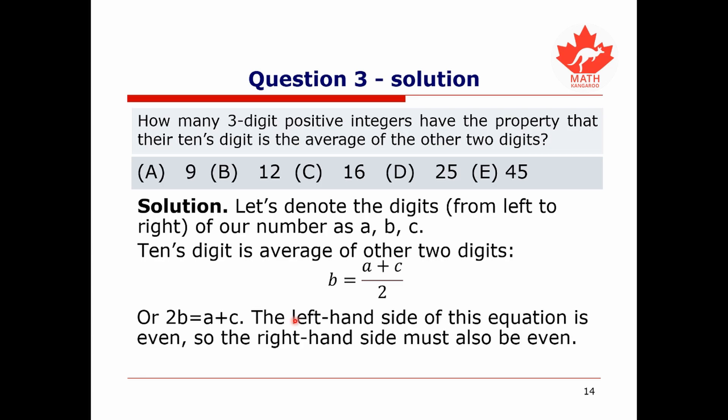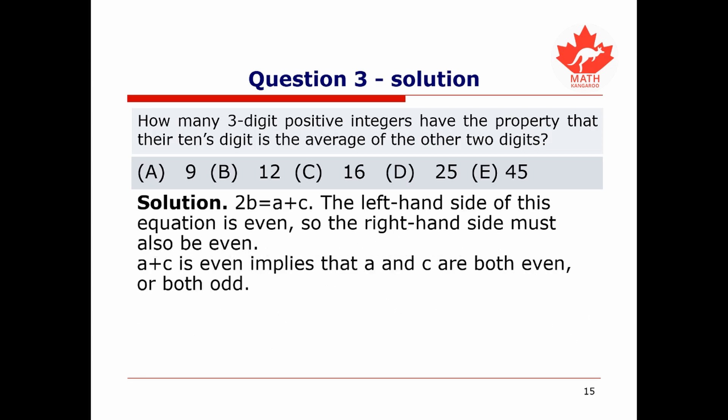Notice that the left-hand side, 2B, is always even. So because of this equality, A plus C must also always be even. For A plus C to be even, both A and C must have the same parity — because odd plus even is odd, but even plus even and odd plus odd are both even. So A and C must both be odd or both be even.